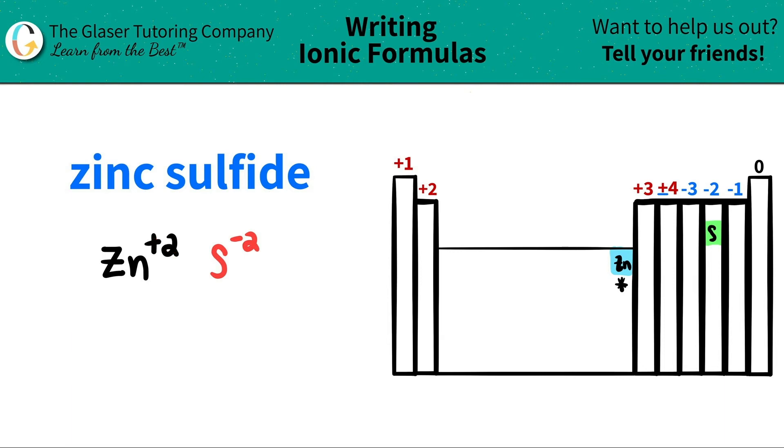This plus two crisscrosses down telling me that I need two sulfurs and this negative two crisscrosses down telling me that I need two zincs.